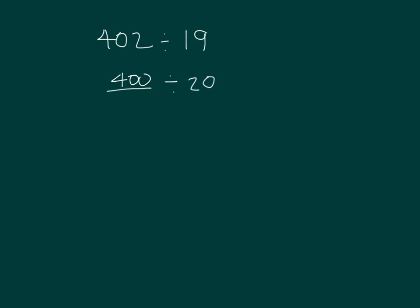What is 400 divided by 20? Well, 400 divided by 10 is 40, and then 40 divided by 2 is 20. So 400 divided by 20 is 20.